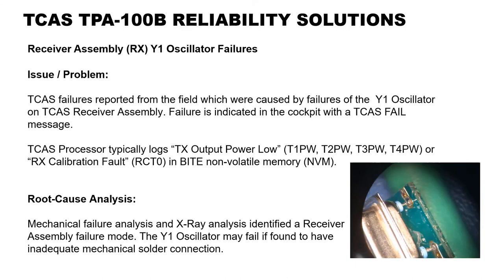Receiver Assembly Y1 Oscillator Failures: The issue reported was TCAS failures from the field caused by failures of the Y1 oscillator on the TCAS receiver assembly. Failures are indicated in the cockpit with the TCAS FAIL message. The TCAS processor typically logs TX output power low, which is T1PW, T2PW, T3PW, or T4PW, either one of these faults, or RX calibration fault RCTO in byte NVM (non-volatile memory). Root cause analysis identified a receiver assembly failure mode in the Y1 oscillator, which may fail when exposed to substantial vibration and environmental stresses.